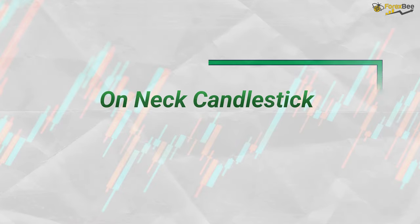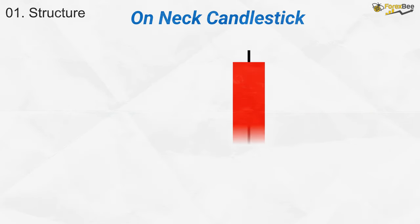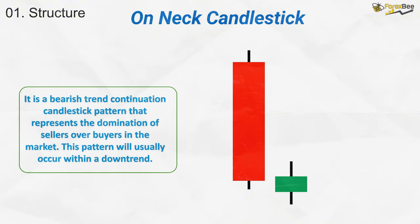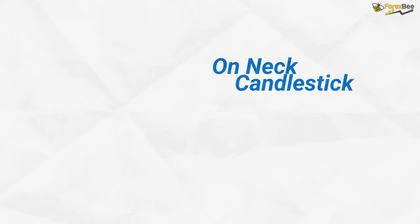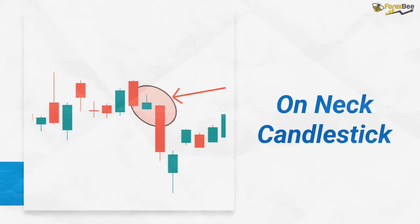Now, let's talk about the structure and location of the on-neck pattern. The first candle is a large bearish candlestick indicating strong selling pressure. The second candle is a smaller bullish or neutral candlestick that opens below the first but closes near the low of the previous candle, creating a neckline effect with the second candle failing to push higher. It is a bearish trend continuation pattern that typically forms during a downtrend, signaling continuation of the bearish trend after a brief pause.